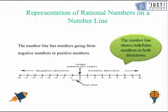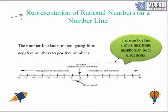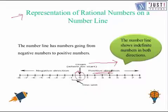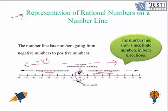Now we move ahead to our topic: representing rational numbers on a number line. All numbers on the right-hand side of zero are positive numbers — that is the positive direction. All numbers on the left-hand side of zero are negative numbers — that is the negative direction. Zero is the origin from where we start.